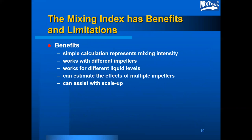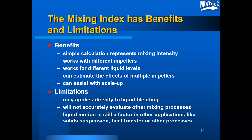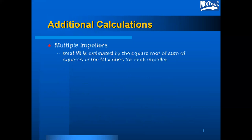The mixing index has the benefits of a simple calculation to represent mixing intensity. It works with different impellers, it works for different liquid levels, it can estimate the effects of multiple impellers, and can assist with scale-up. Some limitations: it only applies directly to liquid blending and will not accurately evaluate other mixing processes. However, liquid motion is still a factor in other applications like solid suspension, heat transfer, or other processes, and the mixing index can provide some indication of intensity for those processes.